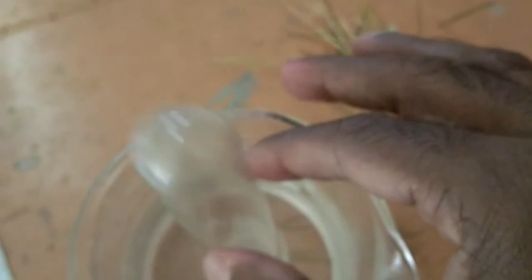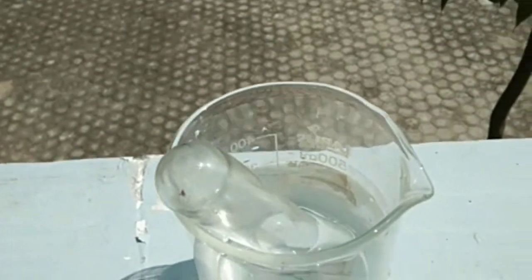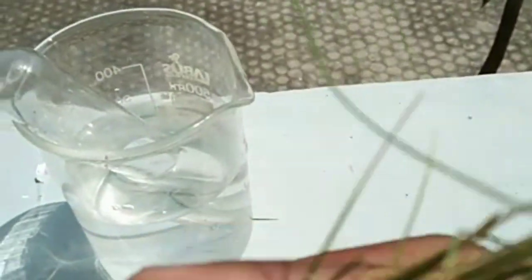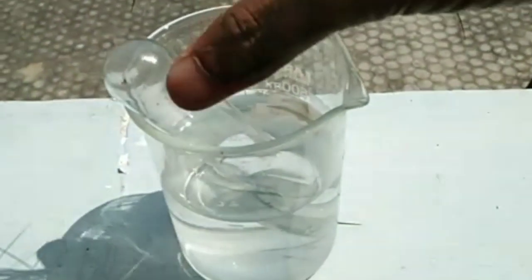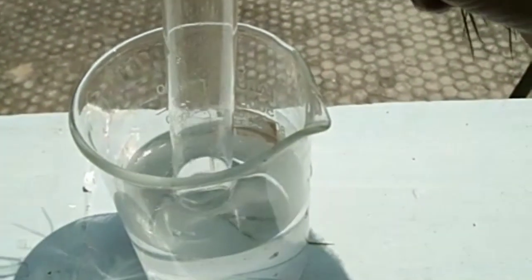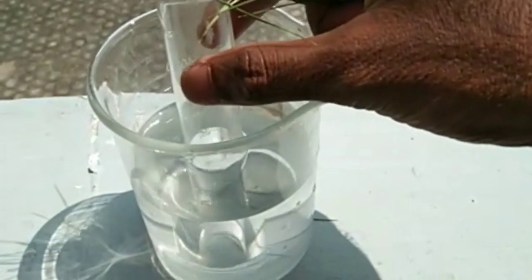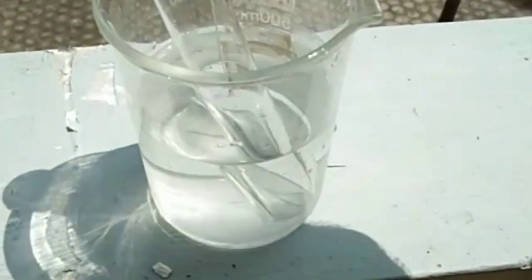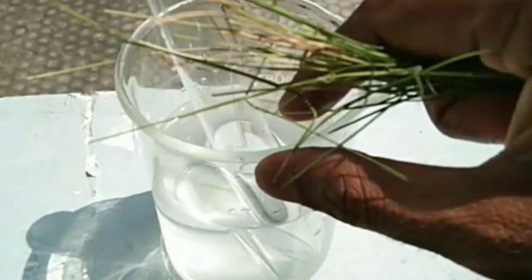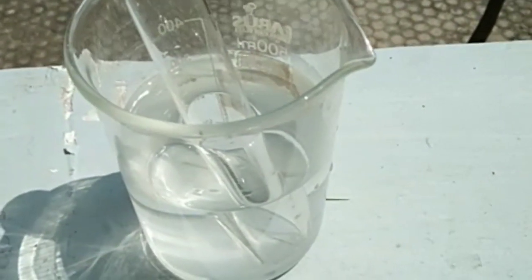After that, I took the grass and kept it inside the funnel. Then fill the beaker with water half or quarter, whatever it is, or limited water. No need to fill it completely.